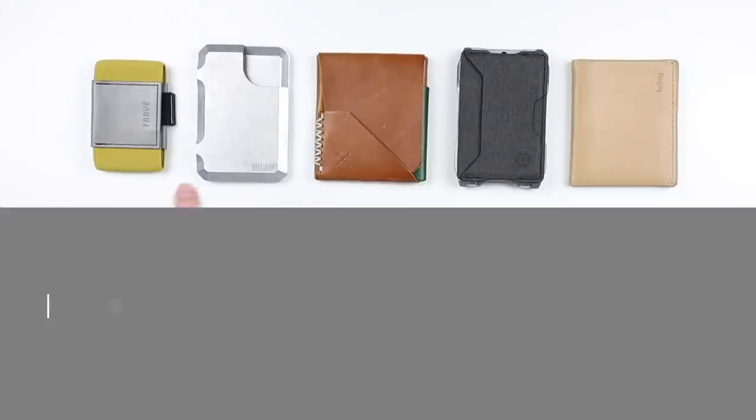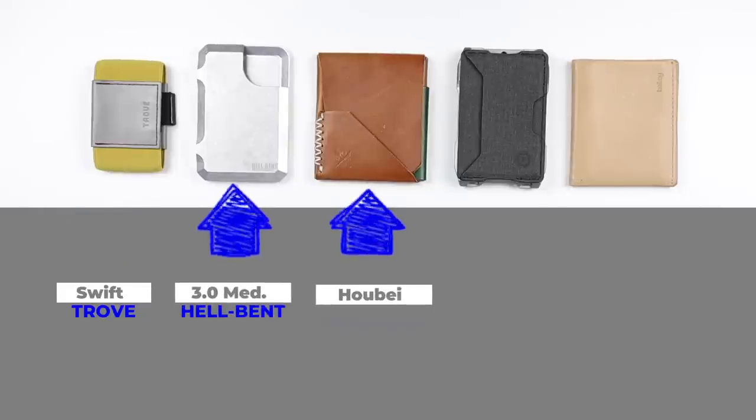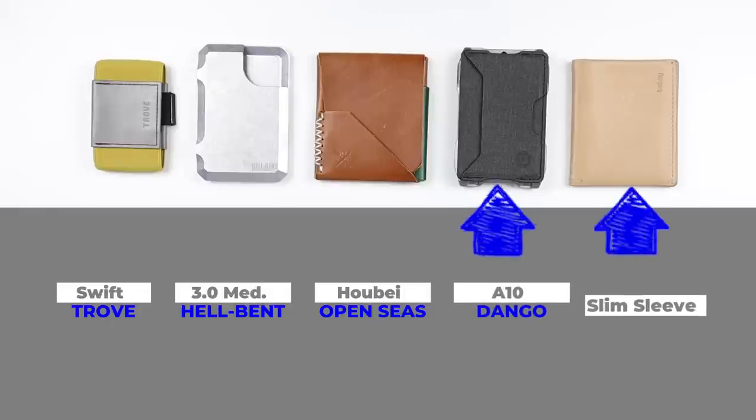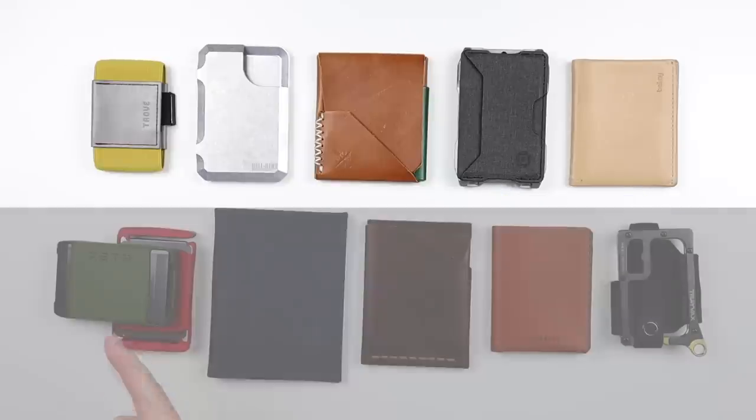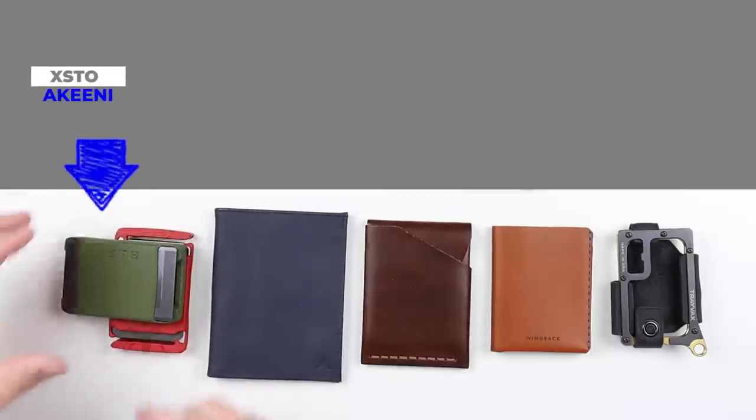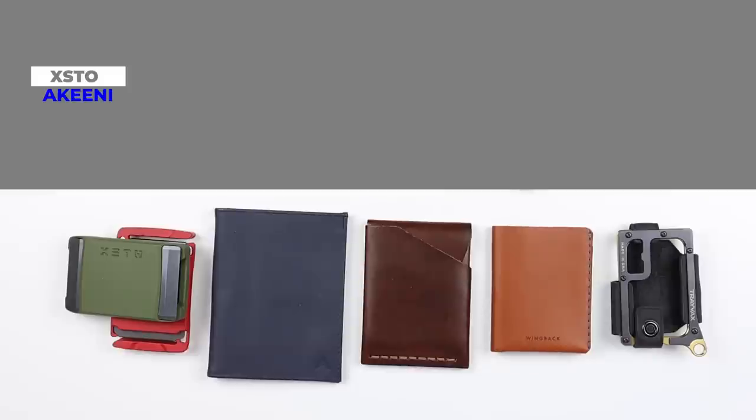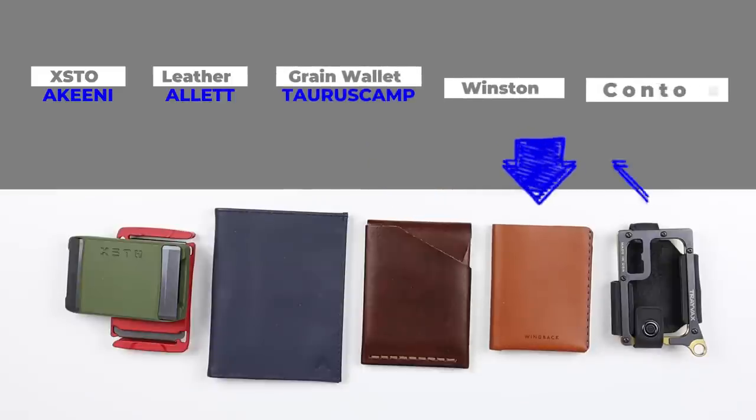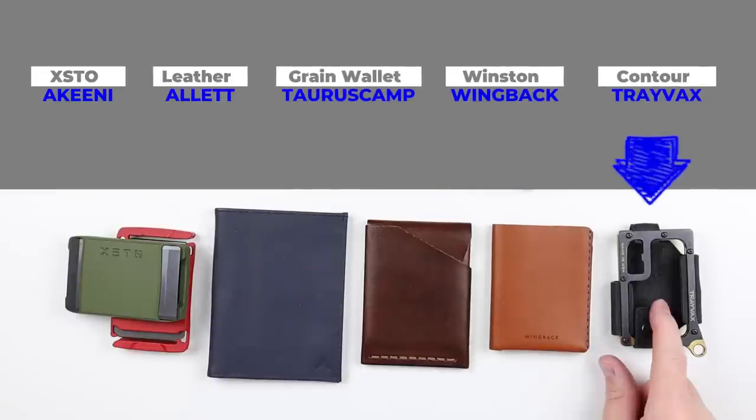Here are Mark's top 10. Starting from the top left, we have the Stowe Swift, then the Hellbent 3.0. To its right is the Dosselfin Mir, which really is now the Open Seas. That's the Hubei. We have the Dango A10, and the Bellroy Slim Sleeve. And then down here on the bottom, we have the X Stowe and the original Stowe. Then the Allette Leather Bifold Wallet, followed by the Taurus Camp Grain Wallet, the Winston from Wingback and the Travex Contour.